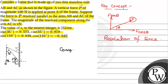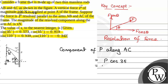Therefore, the component of P along AC will be equal to P cos 35°, which is equal to 100 × cos 35°. Since cos 35° is 0.819, that gives 100 × 0.819, which is equal to 81.9 N.